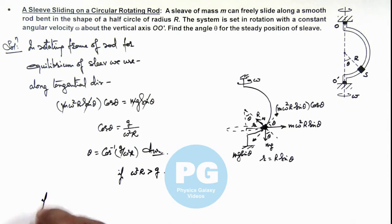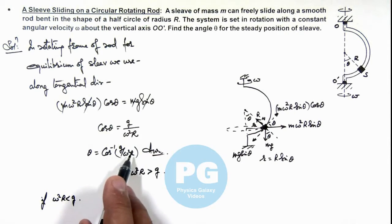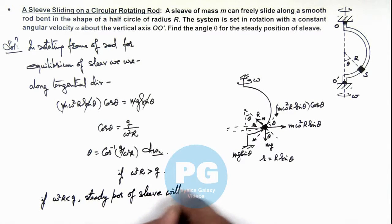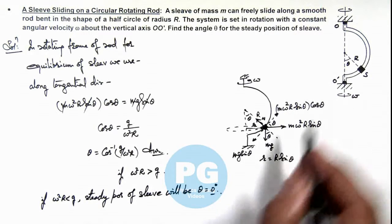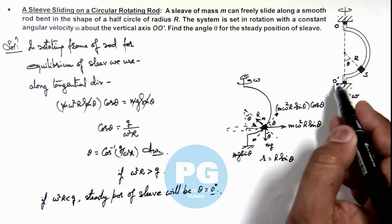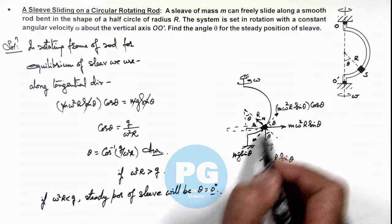If ω²R is less than g, then we can see cos⁻¹ of this argument, if it is greater than 1, this will never exist. So we can write if ω²R is less than g, there is no such steady position, and the steady position of the sleeve will be θ = 0°. That means it will remain in equilibrium at the bottommost point, because if cos θ is greater than 1, such angle θ will not exist, so mg sin θ will bring the sleeve to the initial position.